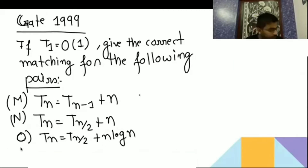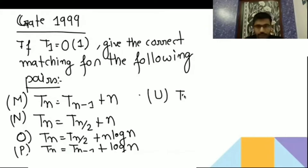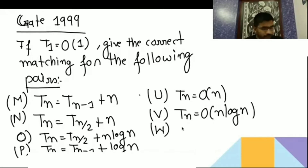Option P is T(n) = T(n-1) + log n. Option U is T(n) = O(n). Option V is T(n) = O(n log n). Option W is also T(n) = O(n log n).